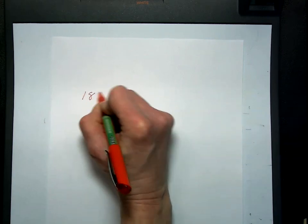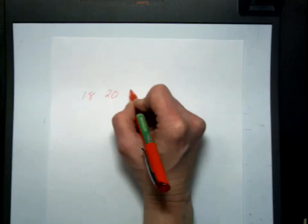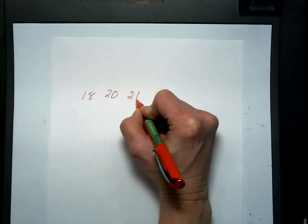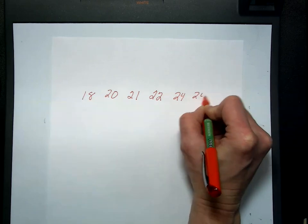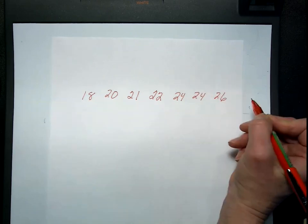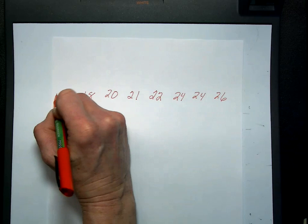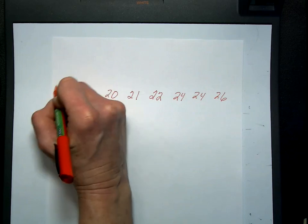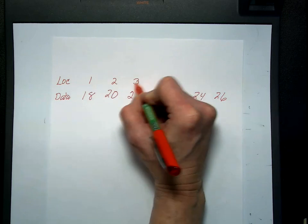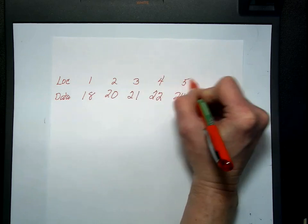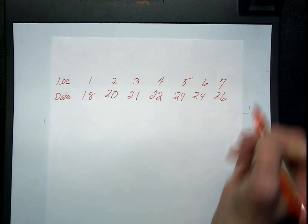18, 20, 21, 22, 24, 24, and 26. I'm going to arrange them least to greatest. You have to do that for quartiles. This is my data, and I'm going to assign them locating points: one, two, three, four, five, six, seven.